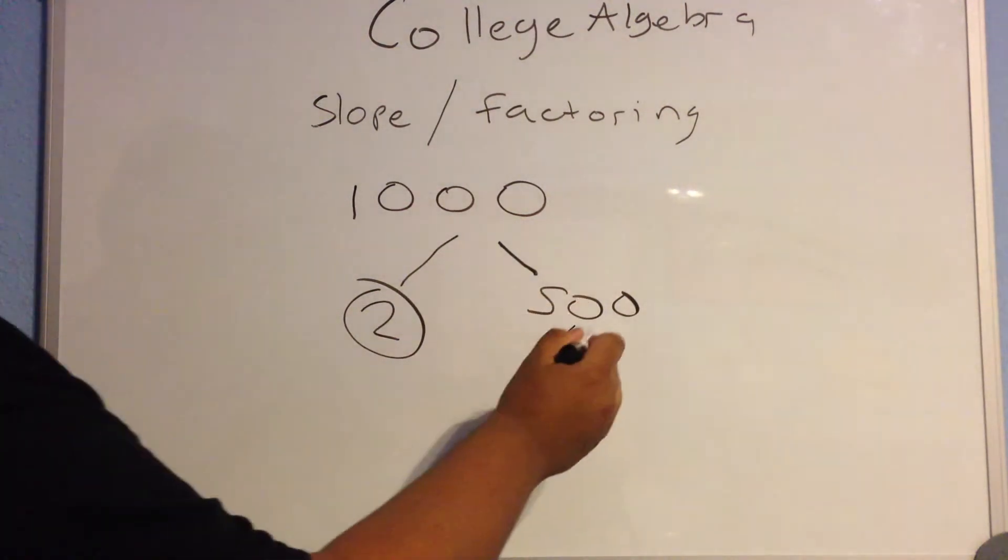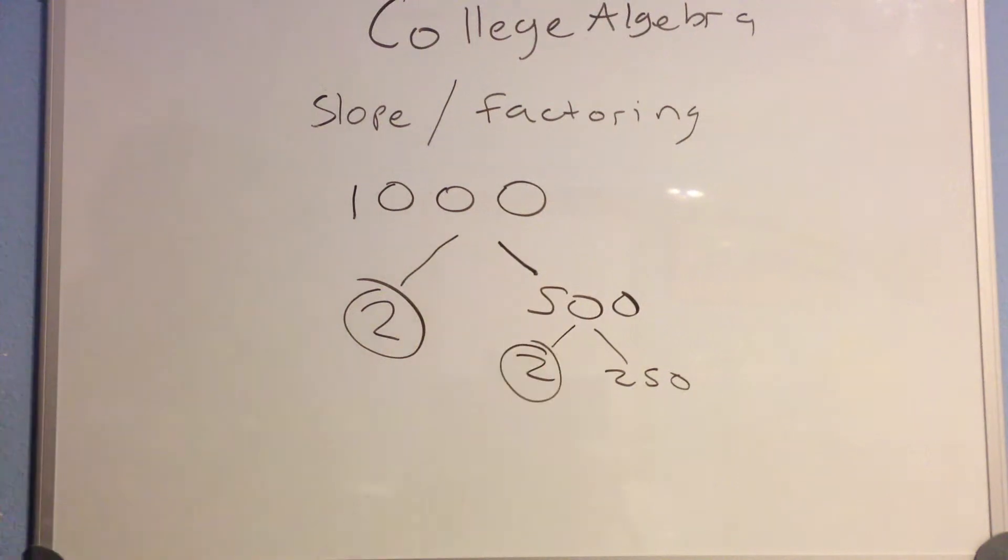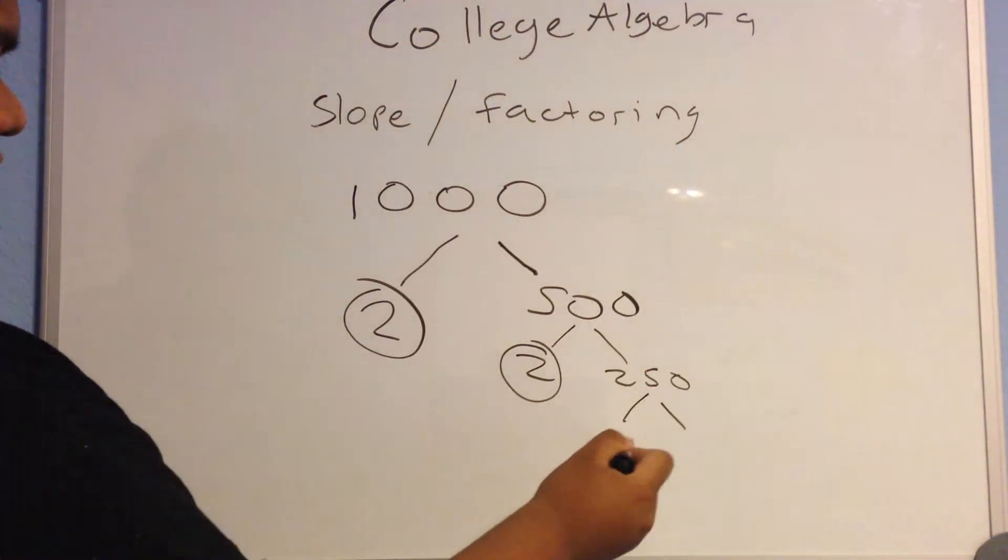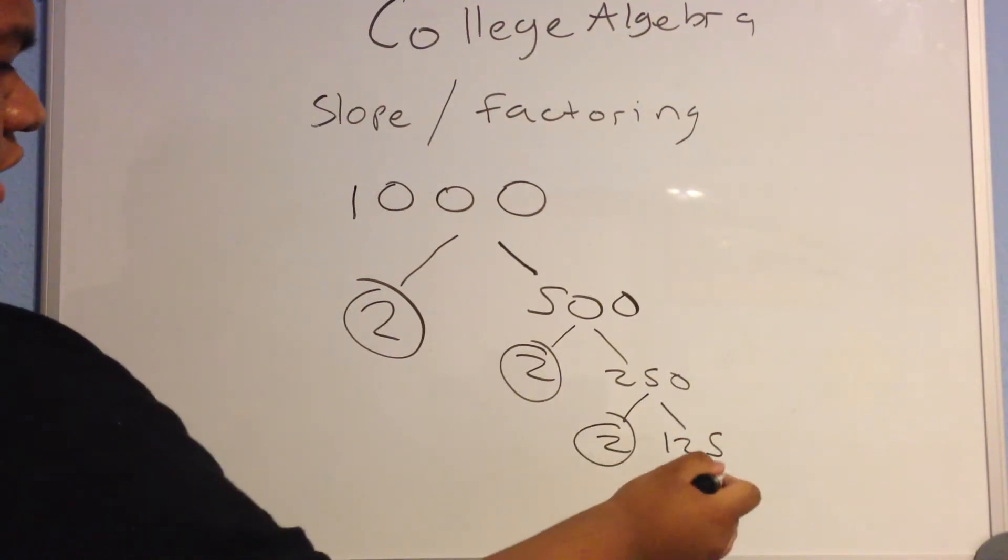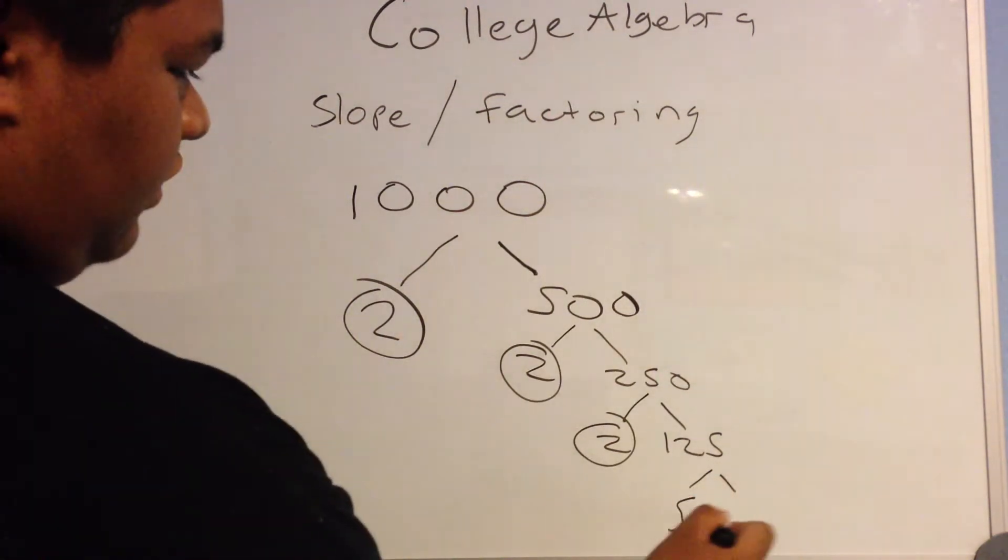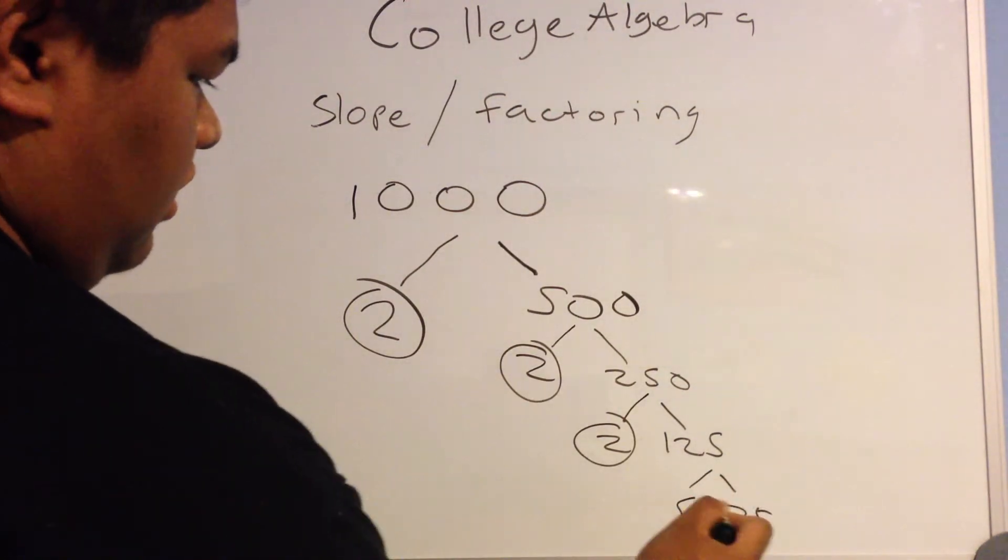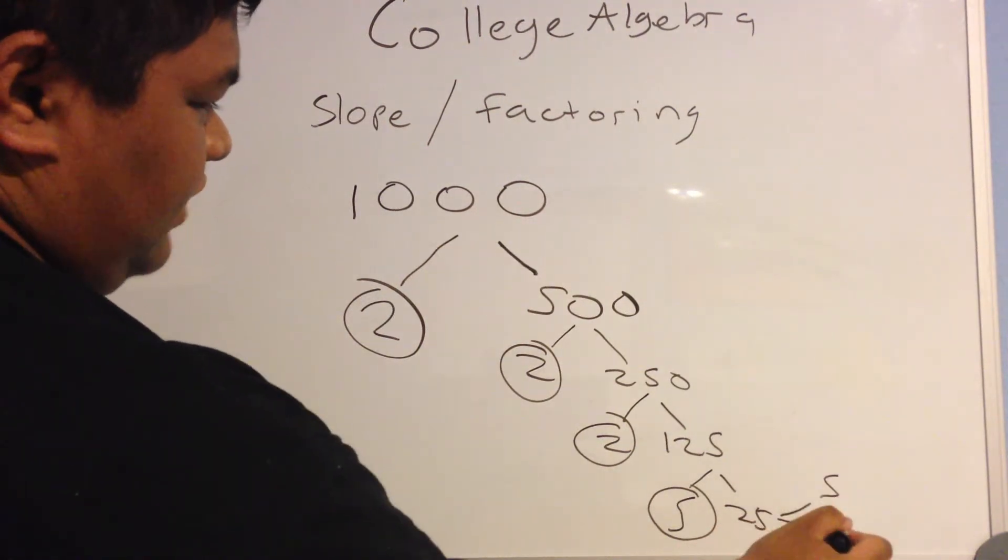Here's 1 prime factor. And then, 2 times 250 is 1 prime factor. And then, 250 goes into 2 and 125. Another prime factor. 125 will go into 5 times 25. And 25 will go into 5 times 5.